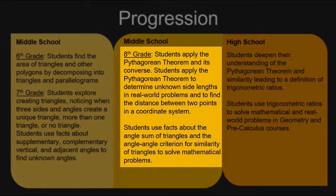Beginning in eighth grade, students apply the Pythagorean theorem and its converse. Students apply the Pythagorean theorem to determine unknown side lengths in real-world problems and to find the distance between two points in a coordinate system. Students use facts about the angle sum of triangles and the angle-angle criterion for similarity of triangles to solve mathematical problems.